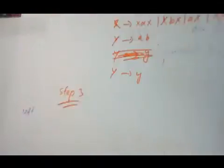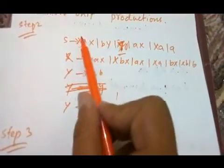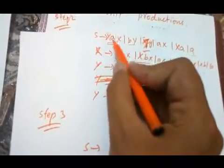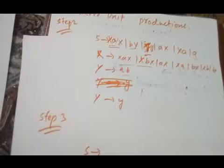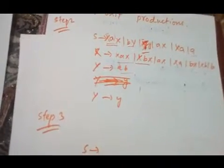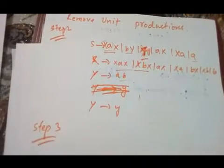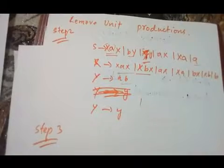Now moving towards the third step: mixed productions. What are mixed productions? Productions which contain variables as well as terminals — for example X is a variable and a is a terminal, so it contains both. Any mixed production should not be there. For example, these are all mixed productions except the last ones. To remove them, I'm replacing Xa with a new variable T, so T goes to Xa. Wherever there is Xa I will replace it with T.